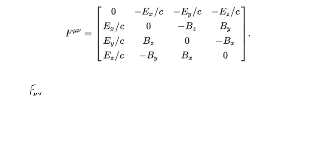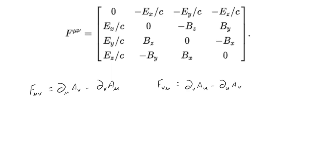In the previous video we have seen that our electromagnetic field tensor F_μν is written as ∂_μ A_ν minus ∂_ν A_μ. Now if we swap the indices μ and ν, we see that F_νμ is nothing but minus of F_μν. This gives us an insight into what kind of tensor F_μν is — it tells us that this tensor is an anti-symmetric tensor.